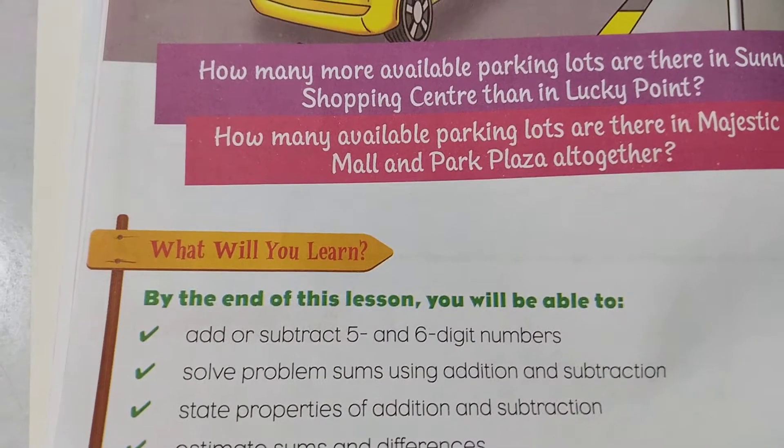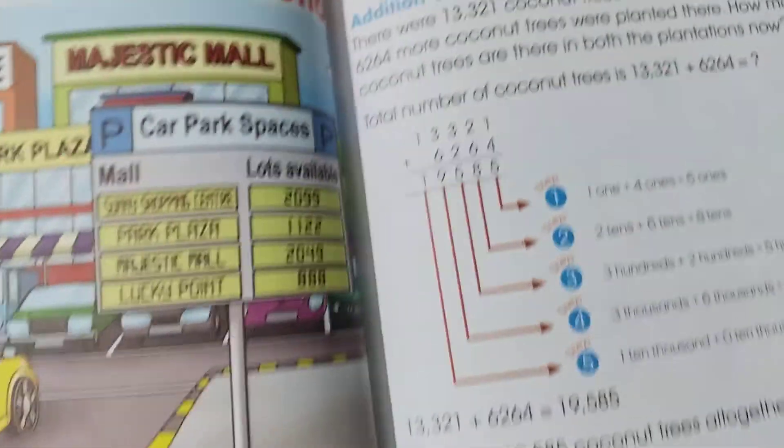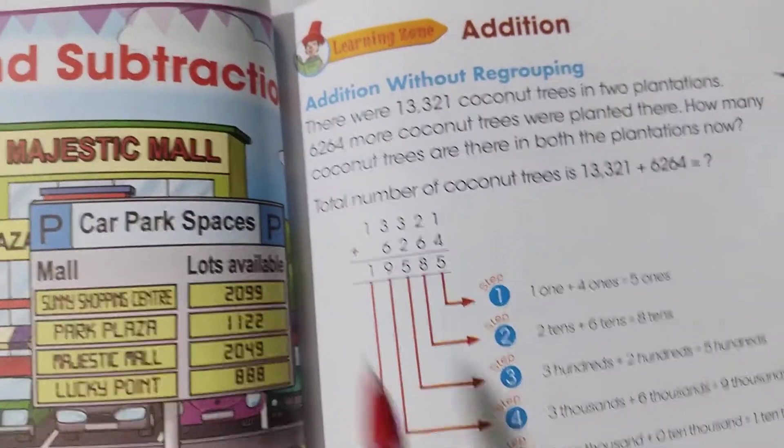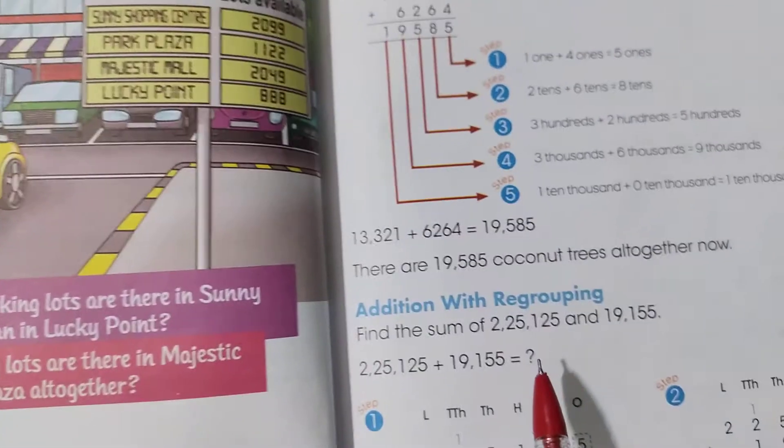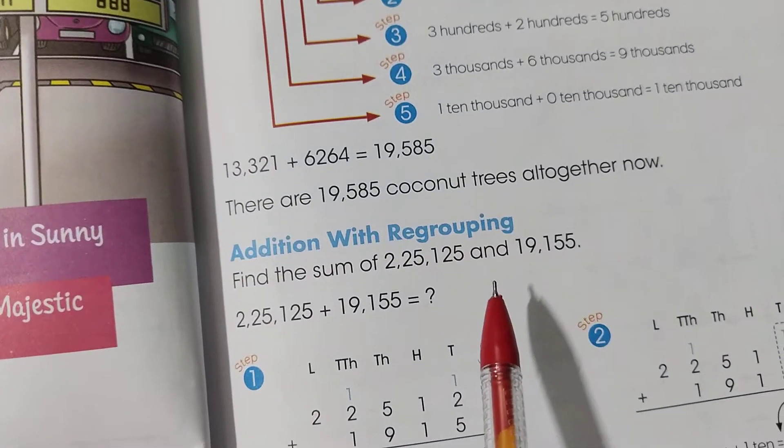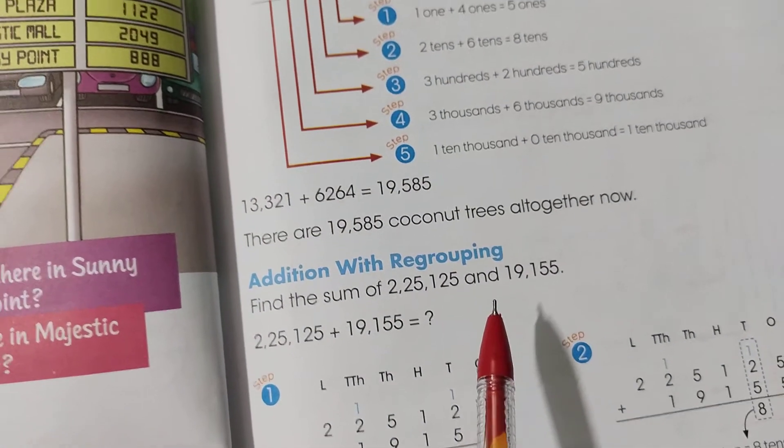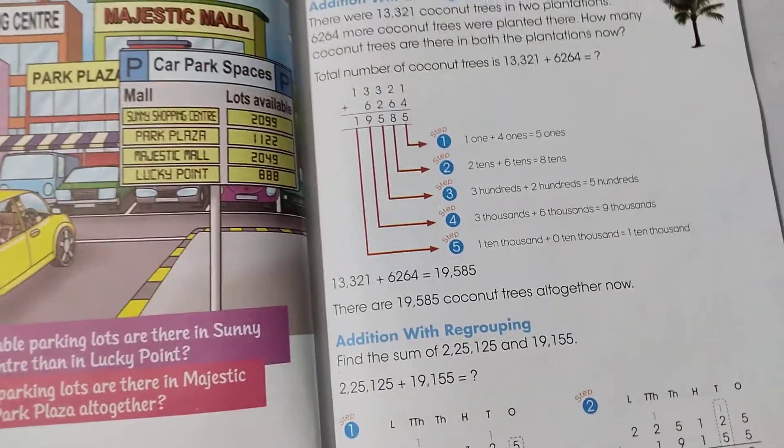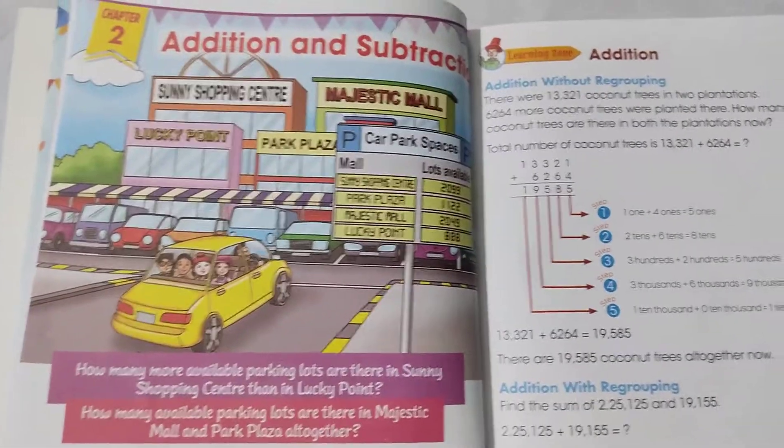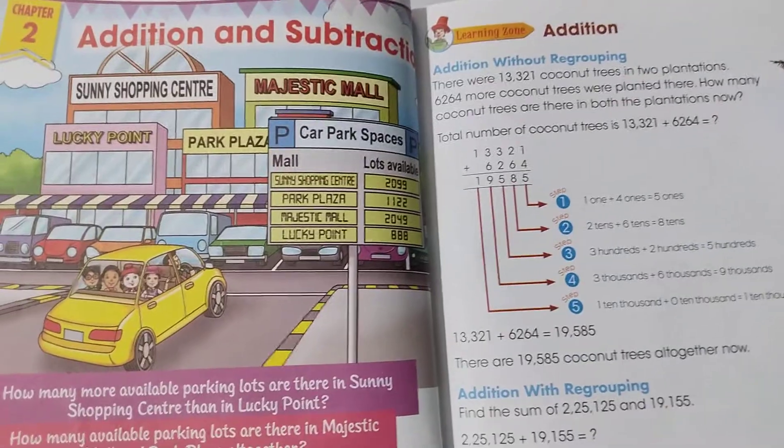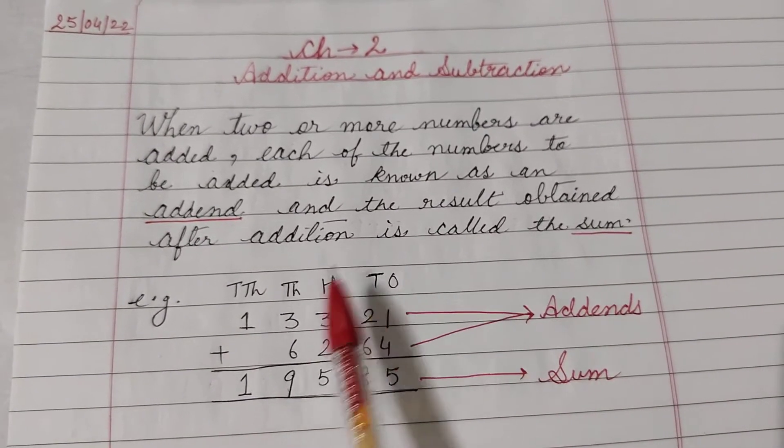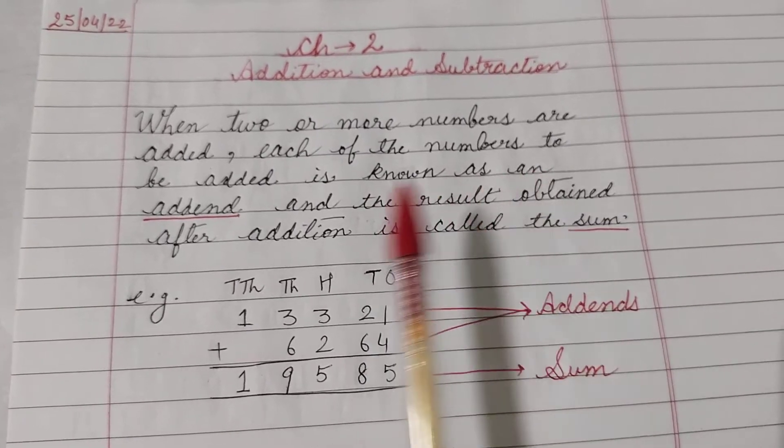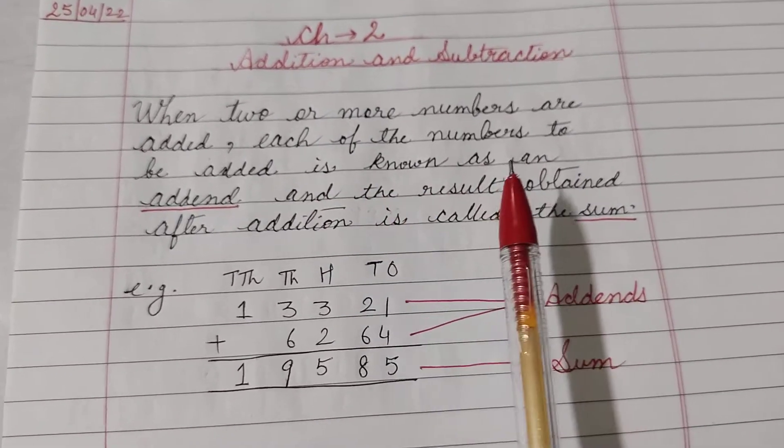Children, first of all, you will learn how to add without regrouping, that is without carryover, and with regrouping, with carryover. Now children, before we start, we should know about addends and sum. When 2 or more numbers are added, each of the numbers to be added is known as an addend.